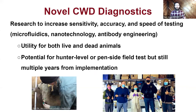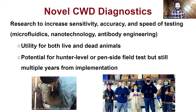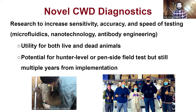On top of RT-QuIC, we are working on other novel CWD diagnostic tools to increase sensitivity, accuracy, and speed of testing. These include microfluidics, nanotechnology, and antibody engineering that have utility for both live and dead animals. There's potential in the future for hunter-level or pen-side field tests, but we're still years away from that — though we can envision it happening in the coming years.